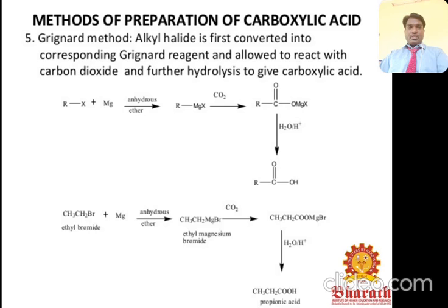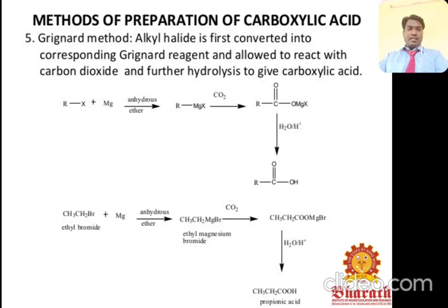For example, alkyl chloride reacts with magnesium to form a Grignard reagent, which then reacts with carbon dioxide. Hydrolysis of the product finally gives the carboxylic acid. Specifically, ethyl bromide reacts with magnesium in dry ether to form ethyl magnesium bromide; further reaction with carbon dioxide and hydrolysis with HCl or sulfuric acid gives propanoic acid.